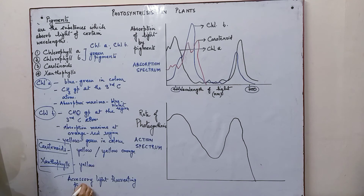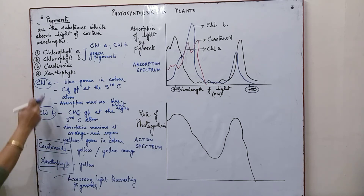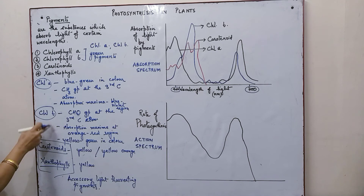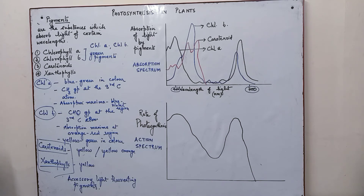When we say accessory light-harvesting pigments, this means they are not directly responsible for absorbing light. Light is absorbed by the chlorophylls, but these two pigments help extend the range of wavelengths over which light can be absorbed for performing photosynthesis. Therefore, they are known as accessory light-harvesting pigments.